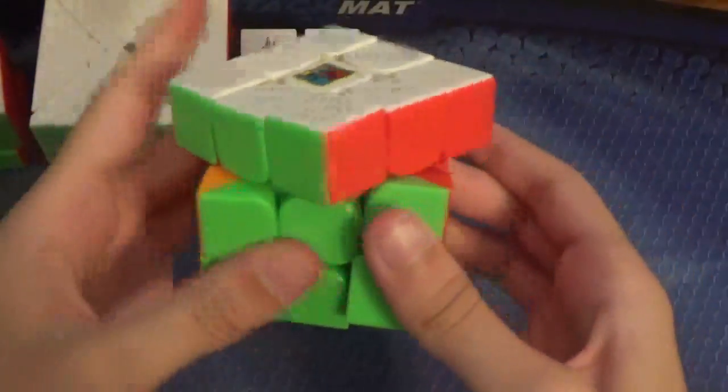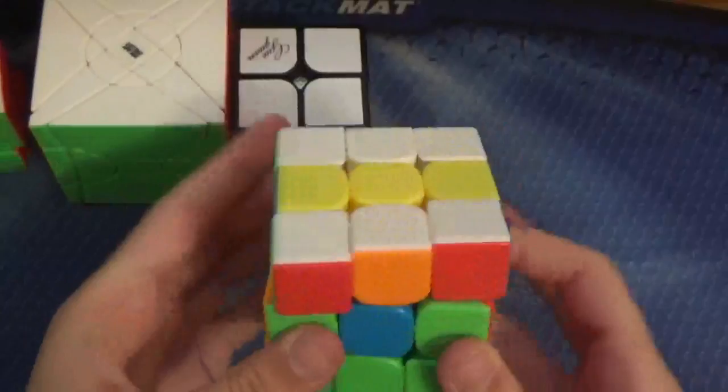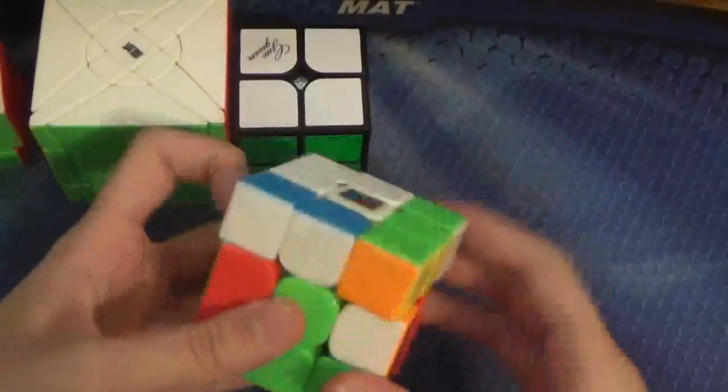it's really tight, so I can't really try corner cutting. Yeah, for a budget 3x3 out of the box, it's already pretty good. I don't know exactly what the price is, but I assume it's going to be similar to the original MF3RS, which is an amazing price for the performance of this cube.